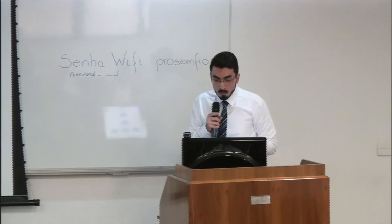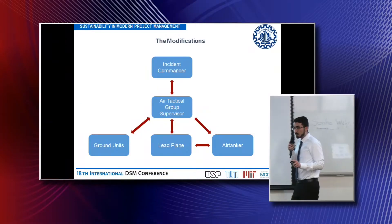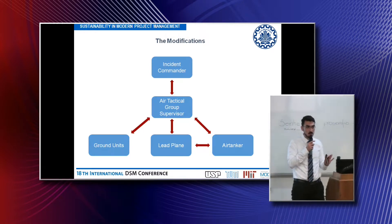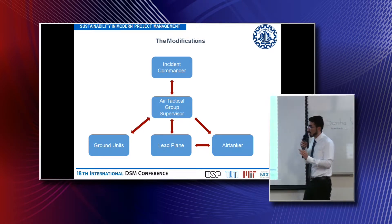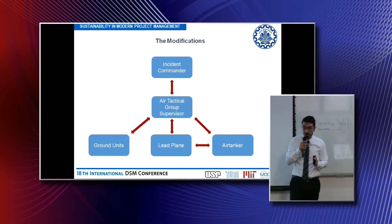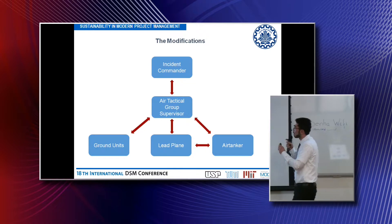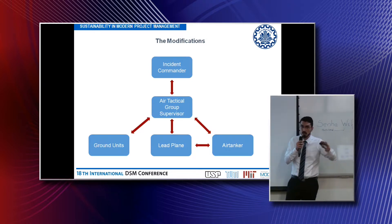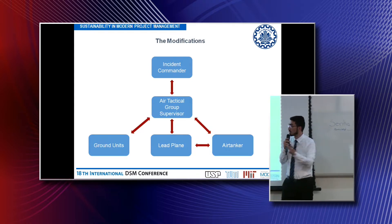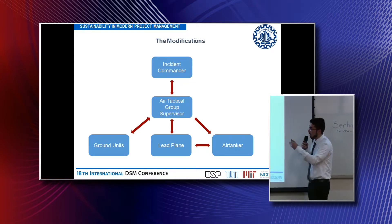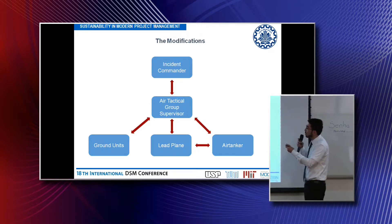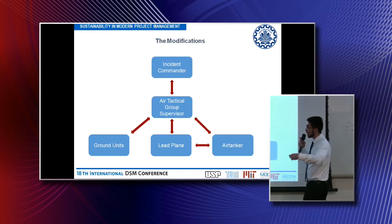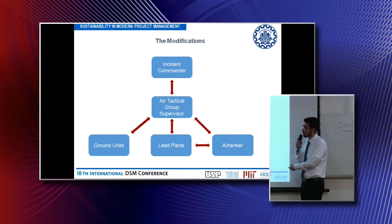Let me recap for a moment. The process architecture showed us that we have three major problems, two of which involve both the air tanker pilot and the incident commander. The first is that they both share a lack of a satisfactory view over the area — the incident commander is far from the incident area and the pilot has the complex view problem. The second problem involving both is the chain of command, which starts from the incident commander and ends at the air tanker pilot.